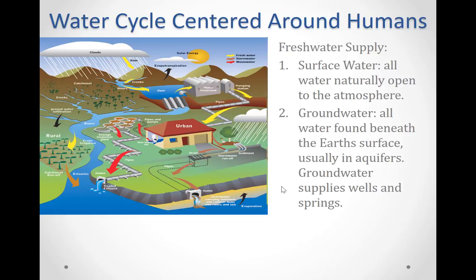As rainfall and other surface water percolates through soil into groundwater, it is cleaned by physical, chemical, and microbial processes in the soil. However, groundwater is not always available, and municipalities may have no choice but to use surface water, requiring extensive and costly water treatment.